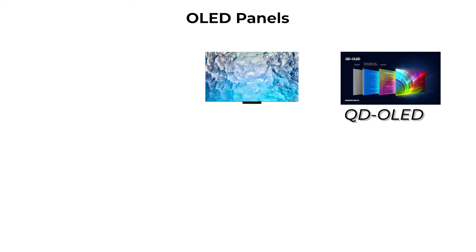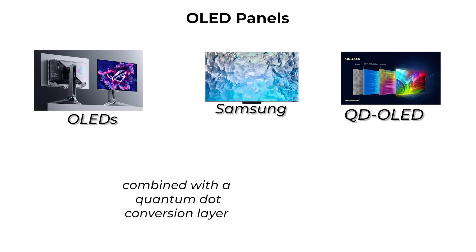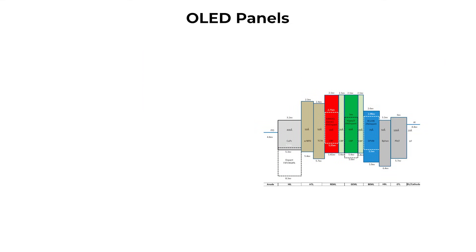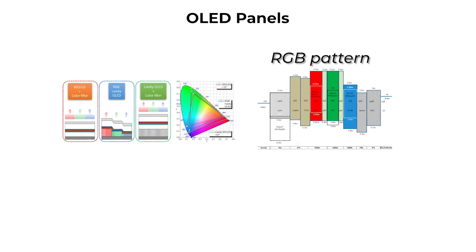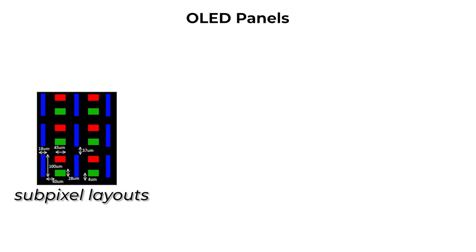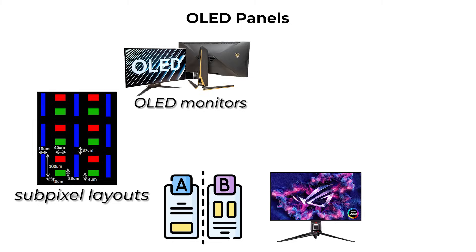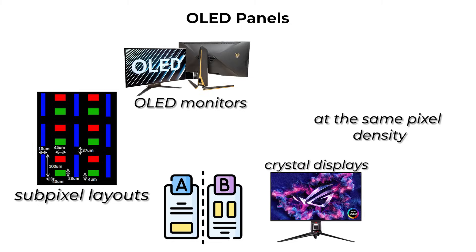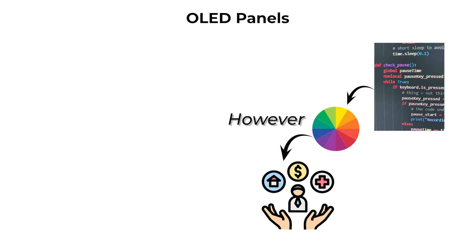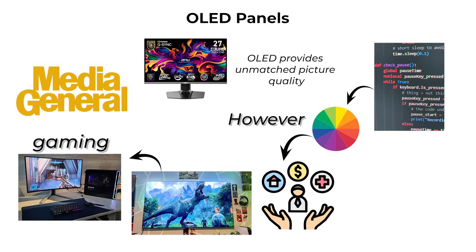QDOLED, developed by Samsung, uses blue-emitting OLEDs combined with a Quantum Dot conversion layer to create red and green light. The subpixels are arranged in a triangular RGB pattern, which improves color performance and brightness, but can introduce text fringing artifacts in certain desktop applications. Because of these subpixel layouts, text clarity on OLED monitors can vary compared to traditional liquid crystal displays at the same pixel density. Users working with a lot of small text may notice colored edges or fringing. However, for movies, gaming, and general multimedia, OLED provides unmatched picture quality.